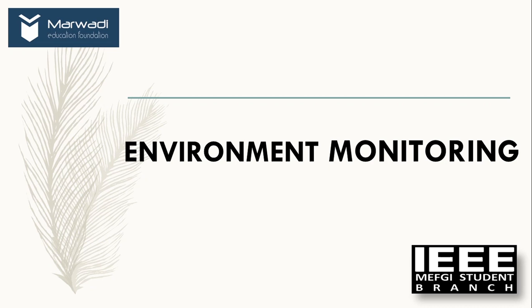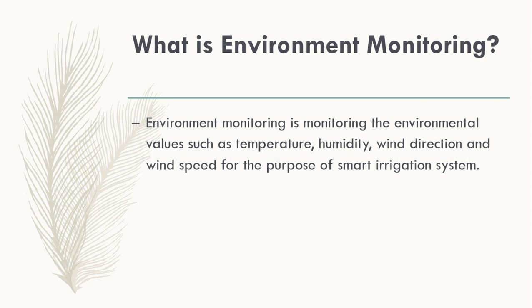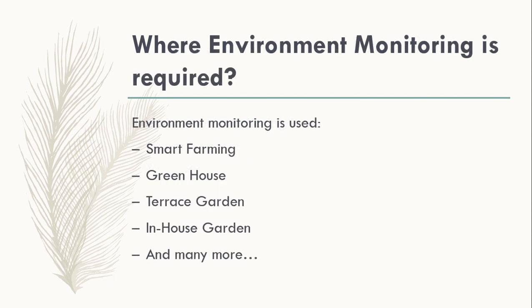In today's video we are talking about environment monitoring. Environment monitoring is the technique when you monitor the temperature, humidity, wind direction, and all other parameters which are part of the environment. This can be used for smart irrigation, smart agriculture, and many other applications. It is required in different applications — in farms, agriculture, terrace gardens, greenhouses, and many more.